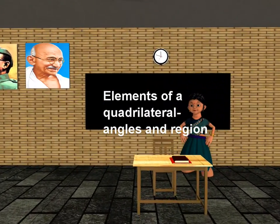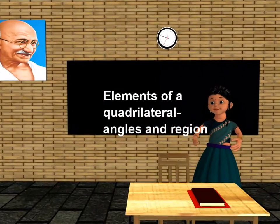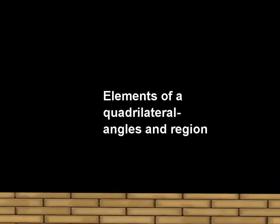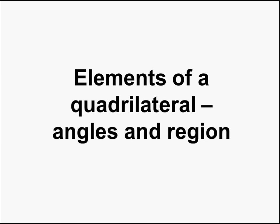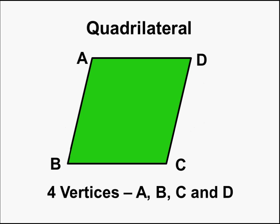Good morning children. Today we shall learn more about elements of a quadrilateral, specifically the angles and the region of a quadrilateral. But first, let us refresh our memories. What is a quadrilateral? A quadrilateral is a four-sided closed figure made of four line segments.